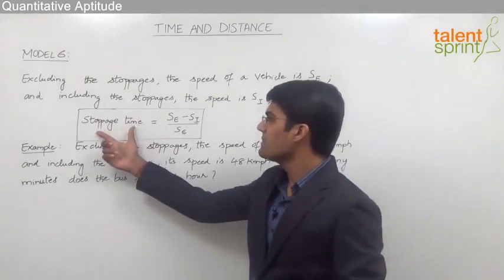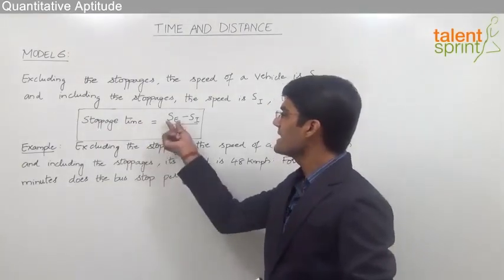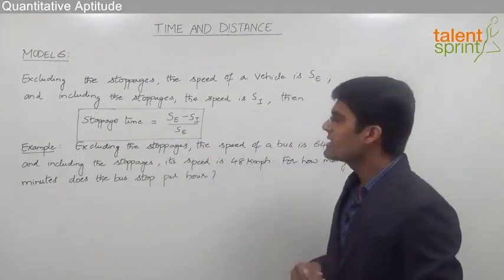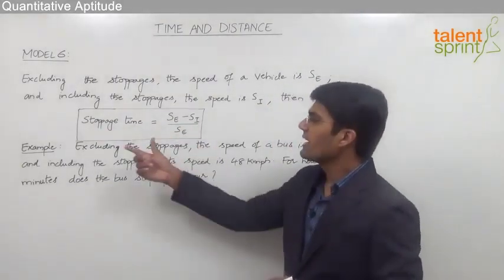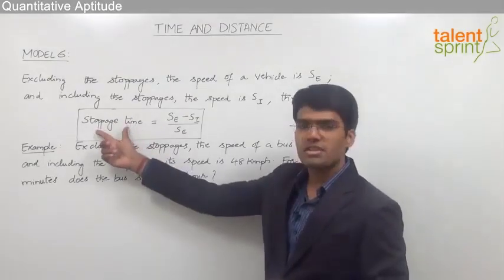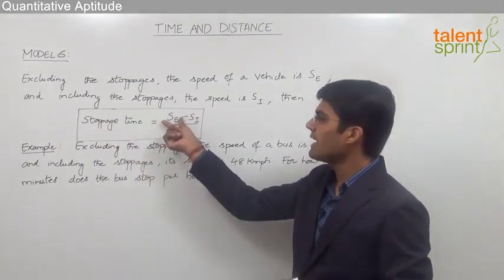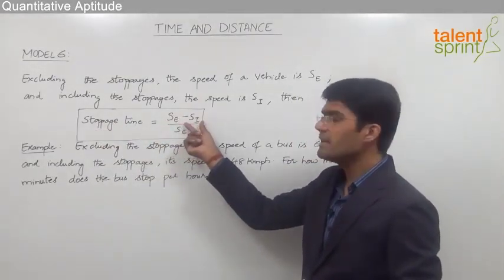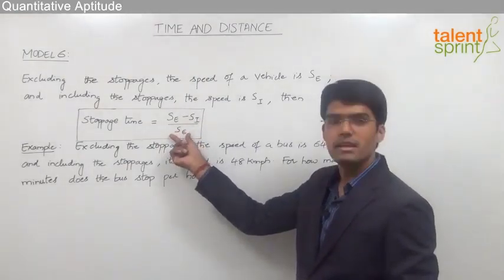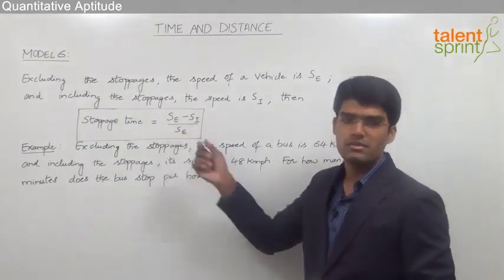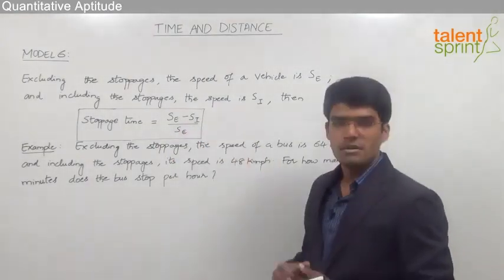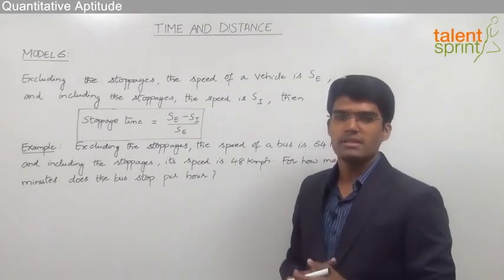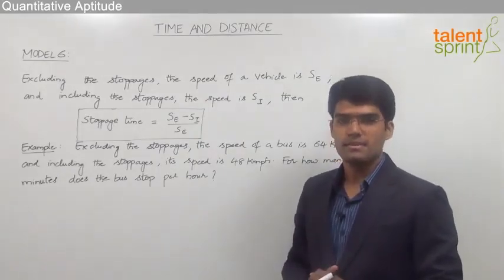The stoppage time is given as (SE minus SI) divided by SE. We can take the stoppage time directly as speed excluding stoppages minus speed including stoppages, divided by speed excluding stoppages. With the help of this simple formula, we can find out the stoppage time directly without writing any further steps.